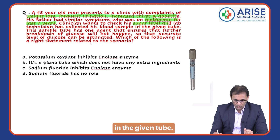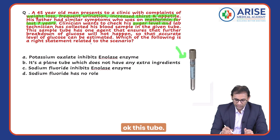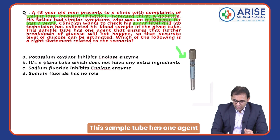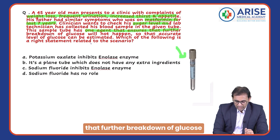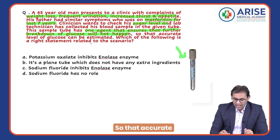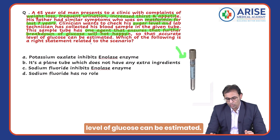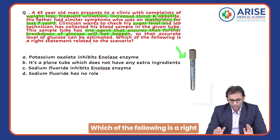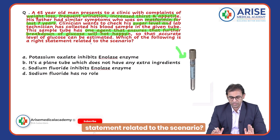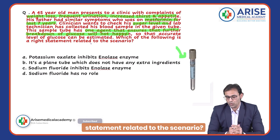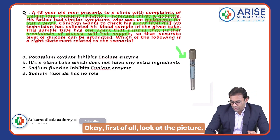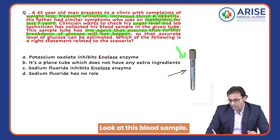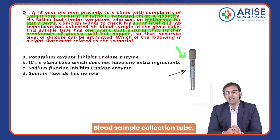The sample tube has one agent that ensures that further breakdown of glucose will not happen, so that an accurate level of glucose can be estimated. Which of the following is the right statement related to this scenario? First, look at the picture — look at this blood sample collection tube.